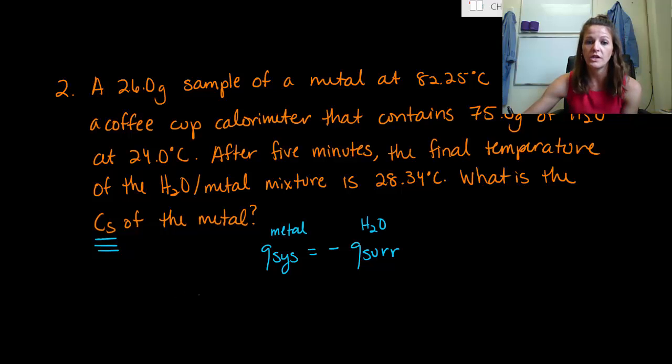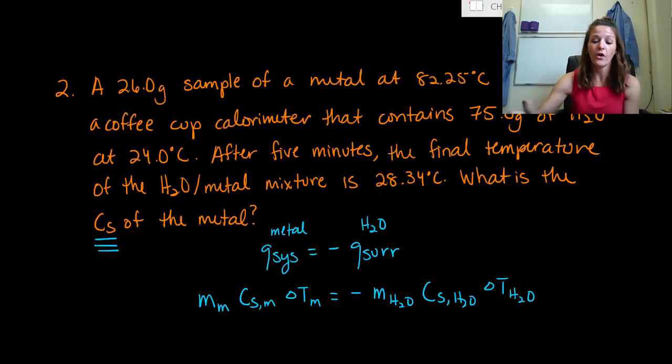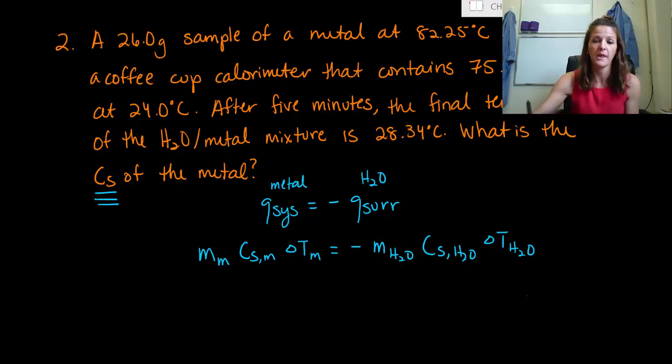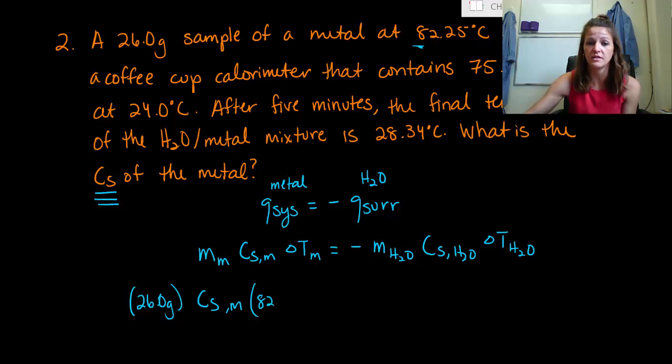So let's work on the metal first. We know we need our mass of our metal, the specific heat of our metal, and the change in temperature of our metal. And that's going to be equal to the negative of the mass of our water times the specific heat of our water times the change in temperature of our water. Now I know I'm being really silly putting the M's and H2O, but you have to be very, very meticulous about this. You cannot mess things up and mix them up. So the mass of our metal, we said that our mass of our metal is 26.0 grams. We're looking for the specific heat of the metal, that's what we're trying to solve for. Now our change of temperature of the metal, it started off at a really high temperature, which was 82.25 degrees Celsius. And remember, we do final minus initial, so that's going to be our initial temperature.